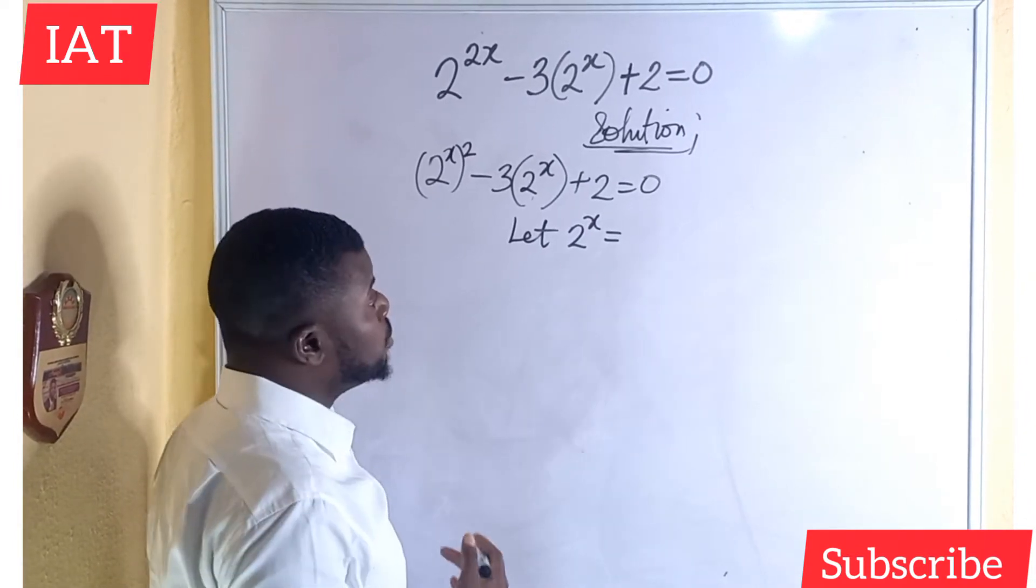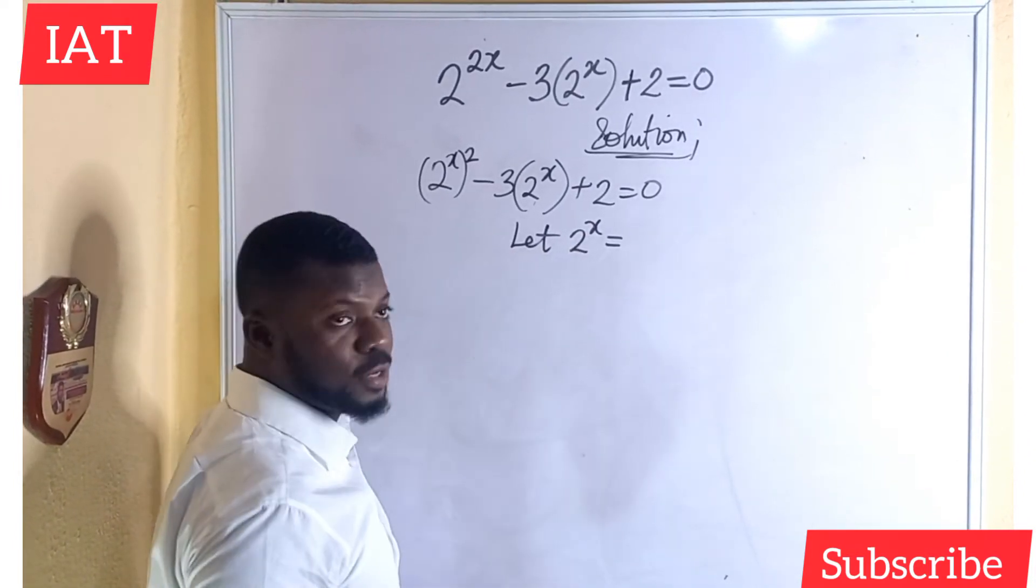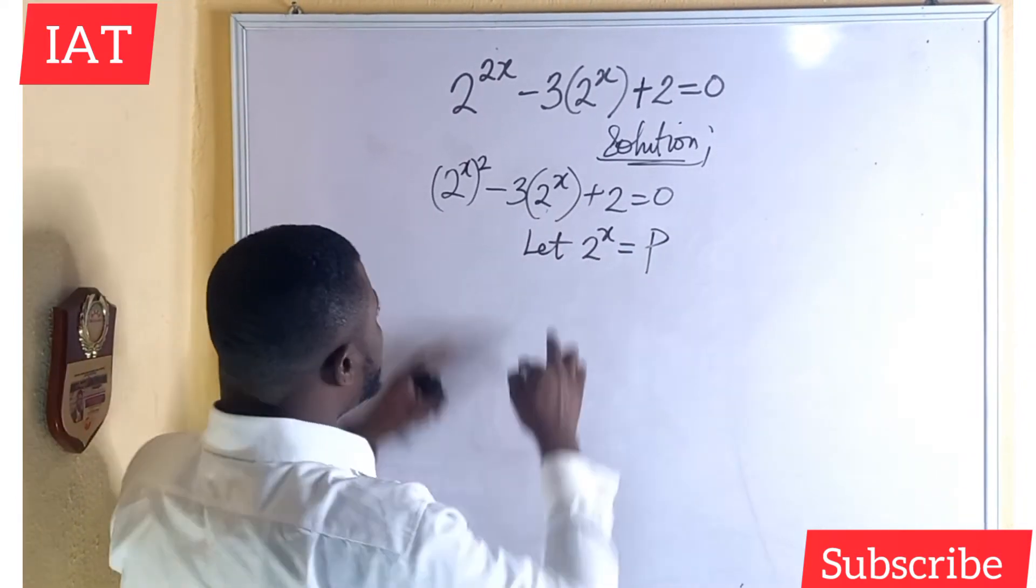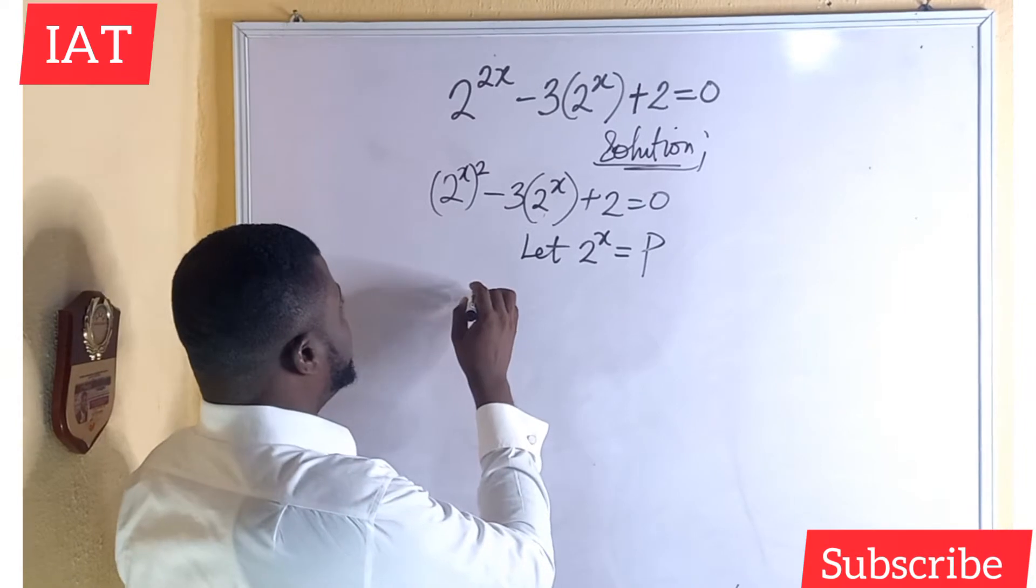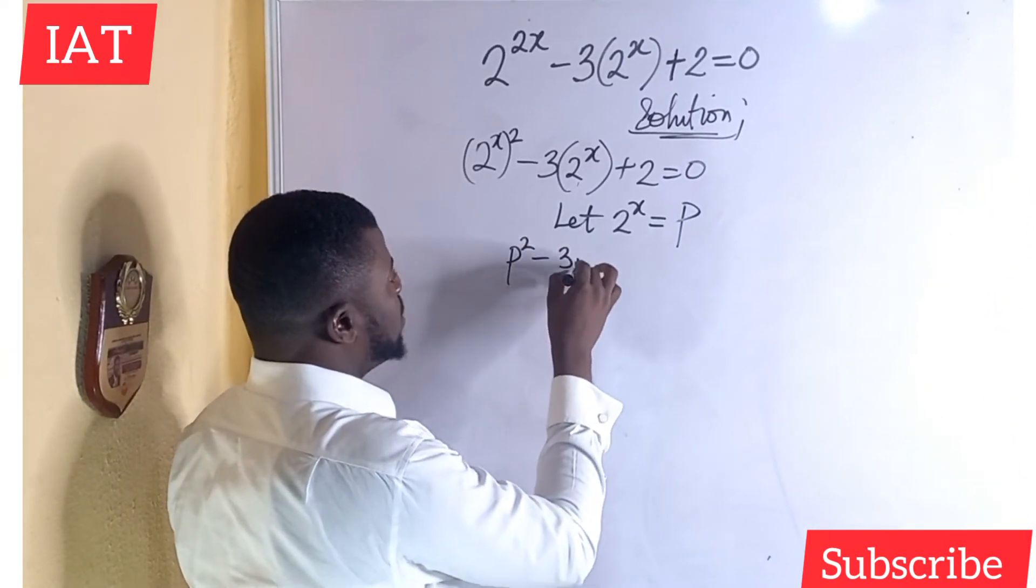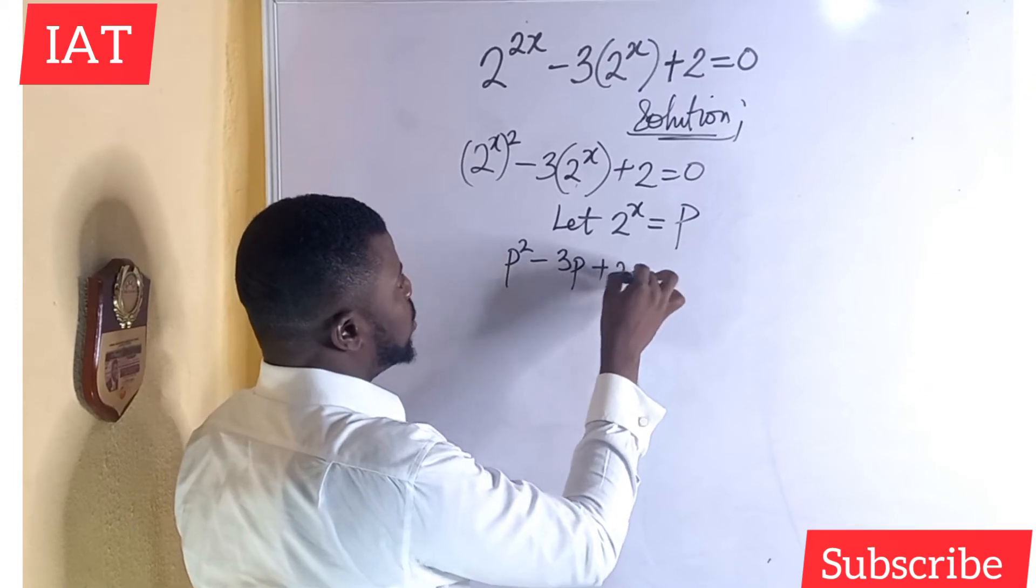Can you use a? Can you use b? But obviously, you can't use x because x is already there. So let's think of using p. Anywhere I see 2 to the power of x, I will replace it with p. So I will have p squared minus 3p plus 2 equal to 0.